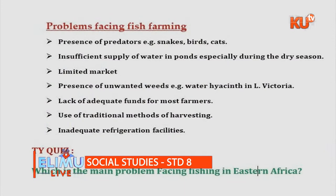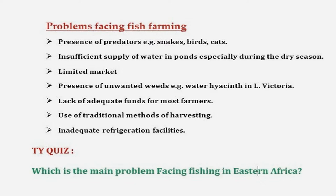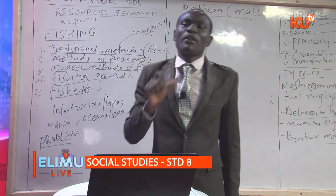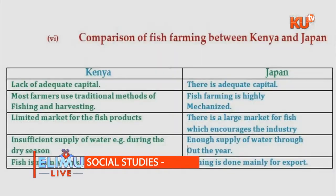Candidates should also be able to compare fishing in Kenya and in Japan. Remember, Japan is one of the most developed countries. Kenya is a developing country whereas Japan is a developed country. The comparison shows that most of the advanced points are on Japan's side, because Kenya is a developing country meaning we don't have sufficient funds.